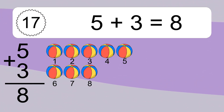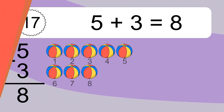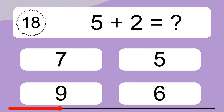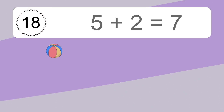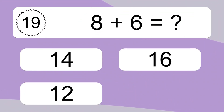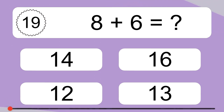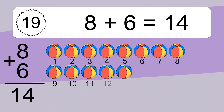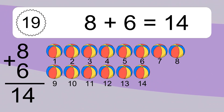Let's count it. 1, 2, 3, 4, 5, 6, 7, 8. 5 plus 2 equals what? 5 plus 2 equals 7. Let's count it. 1, 2, 3, 4, 5, 6, 7. 8 plus 6 equals what? 8 plus 6 equals 14. Let's count it. 1, 2, 3, 4, 5, 6, 7, 8, 9, 10, 11, 12.